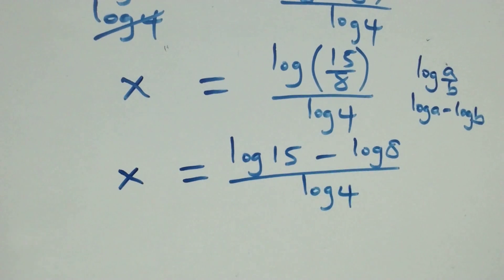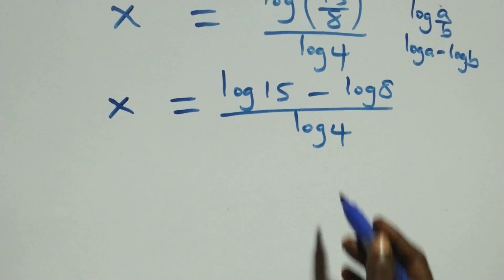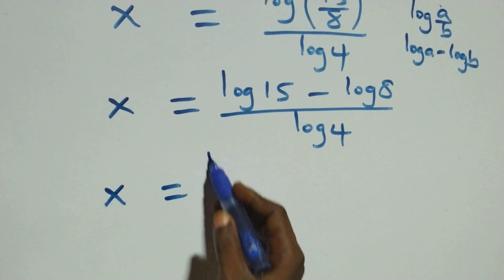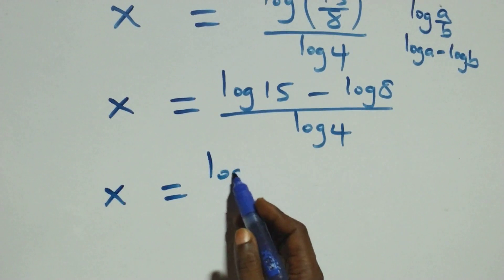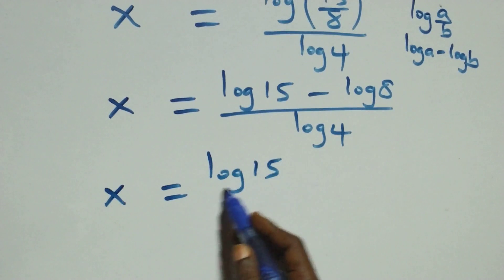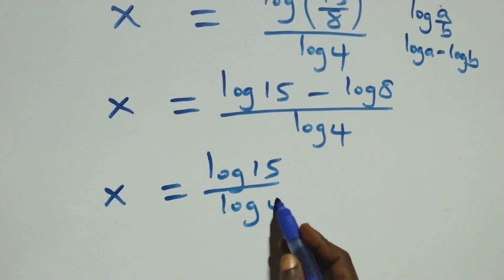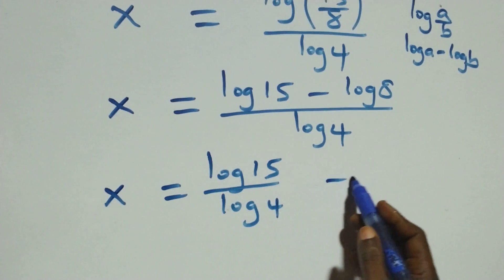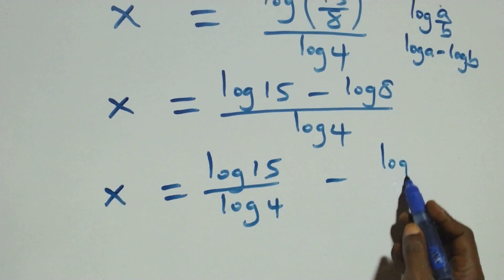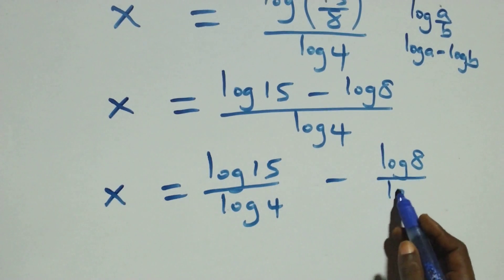Then next step: we separate this into two fractions, and we have x equals log 15 over log 4 minus log 8 over log 4.